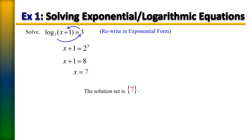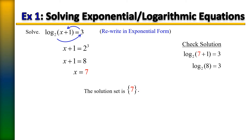Anytime you have an equation and you're not sure about your answer, you can plug your answer back in. If it leaves a true statement, that is your proof. In the original equation, replacing x with 7, we get 7 plus 1 equals 8. Rewriting that log in exponential form gives 2 raised to the third power equals 8, which is true. So the solution is 7.